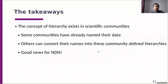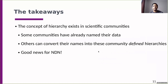Regardless of which scientific community we're talking about, there is a concept of hierarchy. Some communities have already named their data according to this hierarchy; others have not — like the SRA ID example — but they have some sort of community-defined hierarchy, like the tree of life, and can use that to convert their existing names into hierarchical names. This is good news for NDN: regardless of which scientific community we're talking about, we can probably find some sort of hierarchy that can be used to name their data.